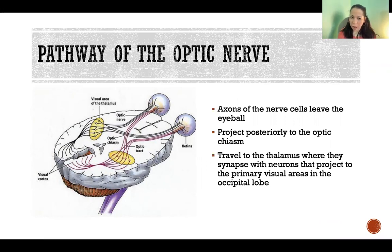So I'm not talking in this video about the pathways that are occurring inside of the eyeball and with the retina. But once the axons are leaving the eyeball, they project posteriorly until they get to the optic chiasm.